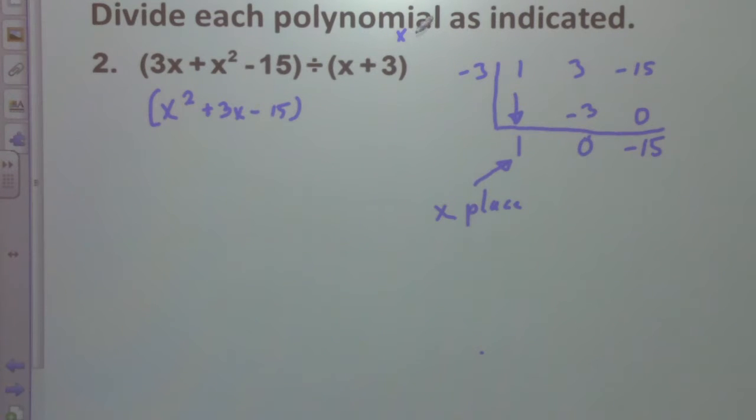So if we set this x plus 3 equal to 0, then we would have x equals negative 3, which goes right here. And then we drop the 1, multiply negative 3 by 1, add, we get 0. Negative 3 times 0 is 0. So this last space here is called our remainder.